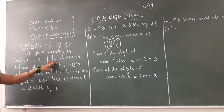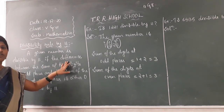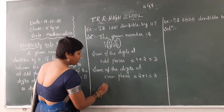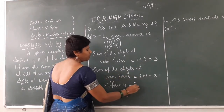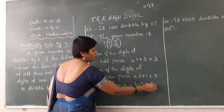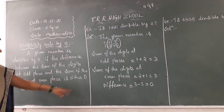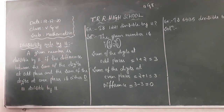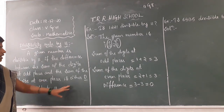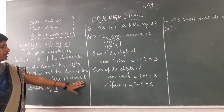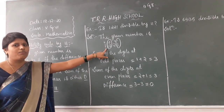Now what do you have to find? The difference — that is, the sum of digits at odd places minus the sum of digits at even places. You have to do subtraction. So 3 minus 3 gives you 0. Now read the definition: if the difference between these two is either 0, or a multiple of 11, or divisible by 11, then the number is divisible by 11. We are getting 0, so 1221 is divisible by 11.